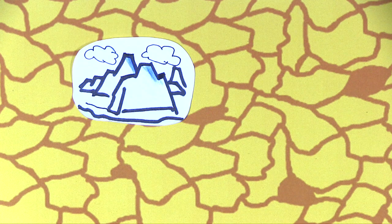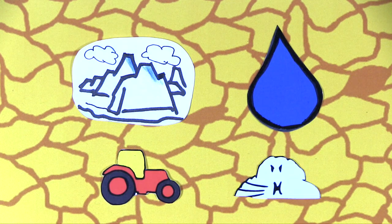Soil erosion is broadly defined as the accelerated removal of topsoil from the land surface through glacial plucking, water, wind or tillage.